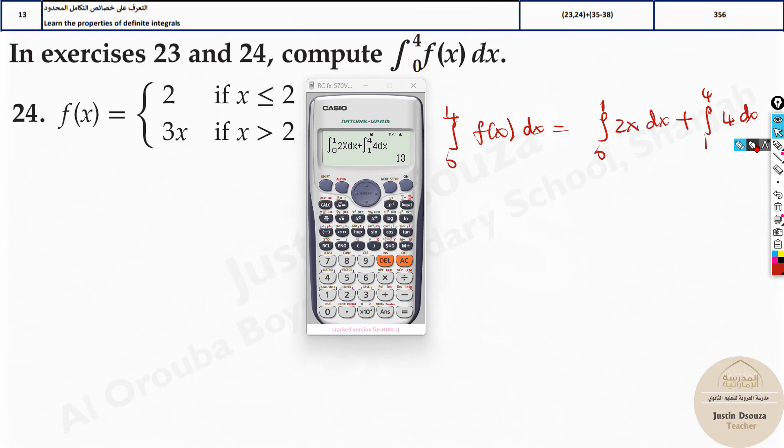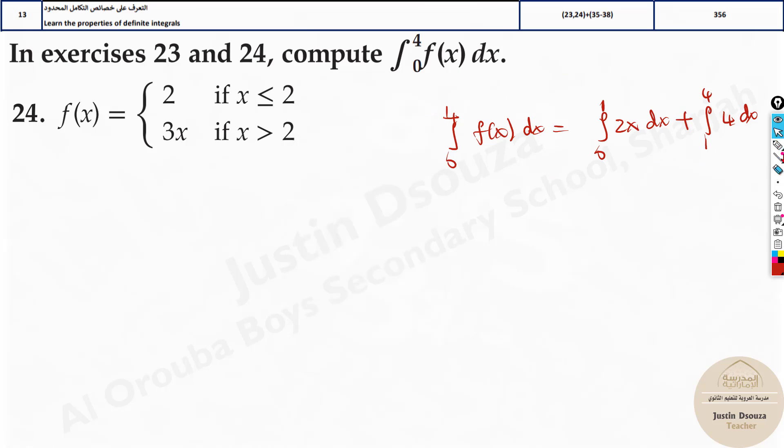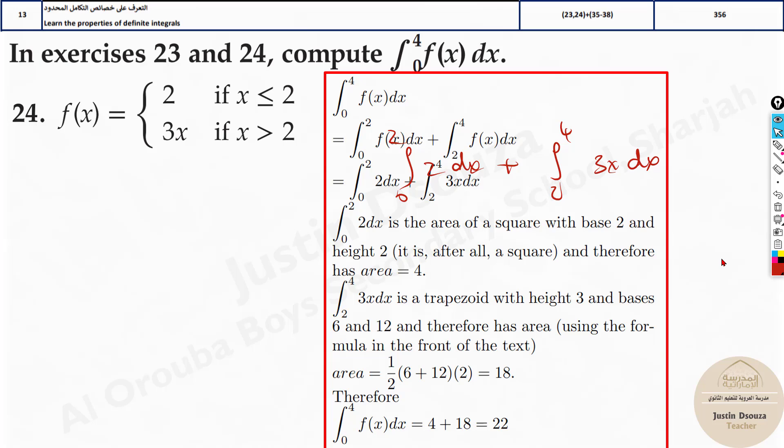For this question it's the same thing, but first we need to change the limits and the function. The limit breaks from 0 to 2, so we will take integral 0 to 2 of 2 dx plus integral 2 to 4 of 3x dx. You can put this in the calculator and the answer will be 12.